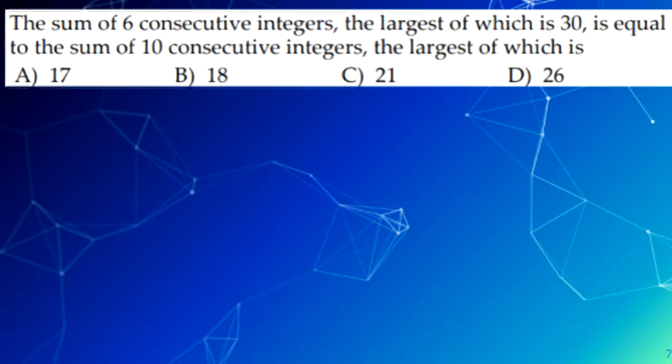Next question, the sum of 6 consecutive integers, the largest of which is 30, is equal to the sum of 10 consecutive integers, the largest which is blank. What we can do for this question is, because it has 6 consecutive integers which the largest is 30, we can do 25 plus 26 plus 27 plus 28 plus 29 plus 30. Since 165 is the answer if you add those all up, and 165 divided by 10 is 16.5, the middle numbers are 16 and 17.